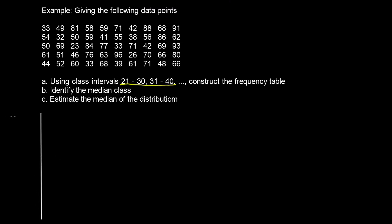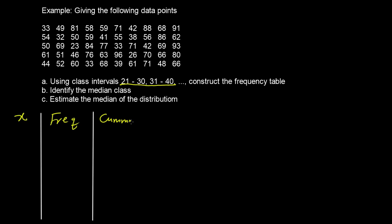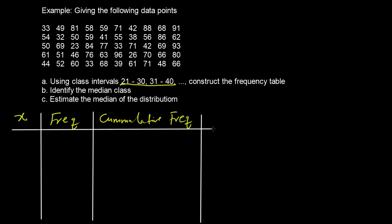We are going to have a column for the class intervals — all the groups we are looking at — along with the frequency of each group and the cumulative frequency. To estimate the median using the interpolation formula, we only need these three values: our groups, the frequency of each group, and the cumulative frequency of each group.